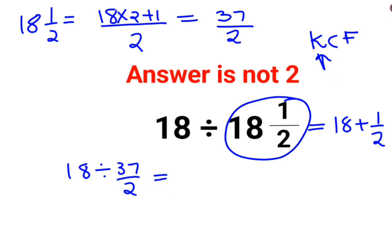where K stands for keeping the first number as it is. C stands for changing the division sign to multiplication. F stands for flipping or taking reciprocal of 32 by 7 that is 2 by 37. So answer for this question is supposed to be 36 by 37.